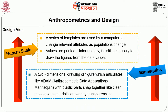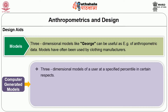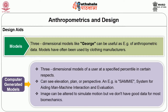Mannequins are used by fashion designers, interior designers, and furniture designers. A two-dimensional drawing or articulated figure — called an anthropometric data applications mannequin — uses plastic parts that snap together like movable paper dolls or overlay transparencies. Three-dimensional models like the George model can be useful as examples of anthropometric data and have often been used by clothing manufacturers. Computer-generated models are three-dimensional models of a user at a specified percentile, showing elevation plans and perspective plans — an example is the SAMI system for aiding manufacturing, man-machine interaction, and evaluation with simulated motion.